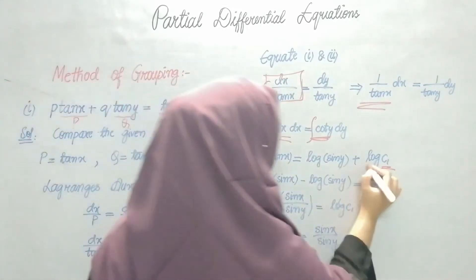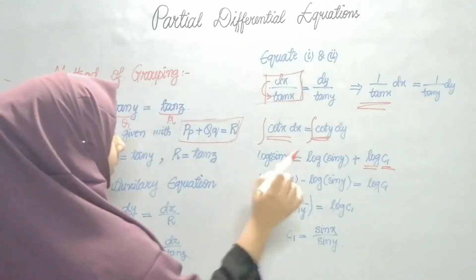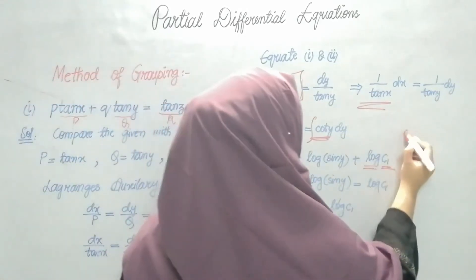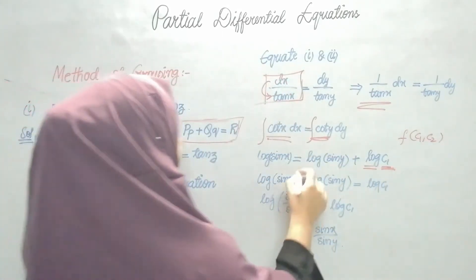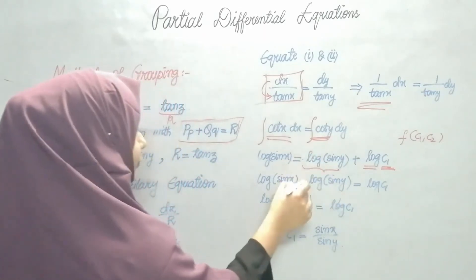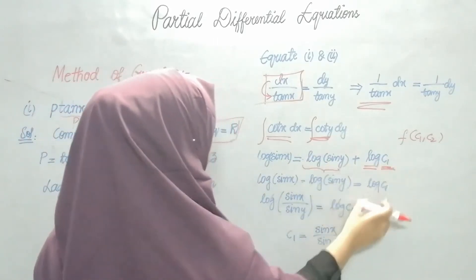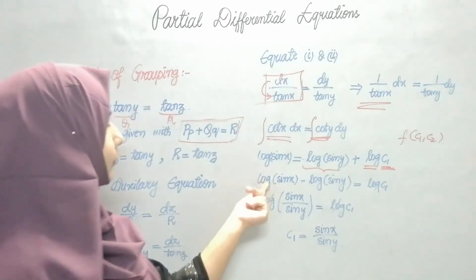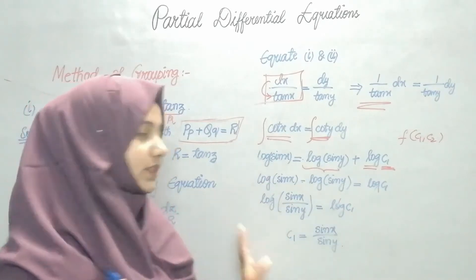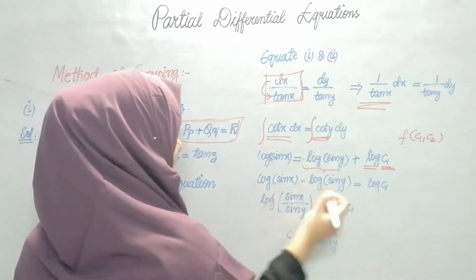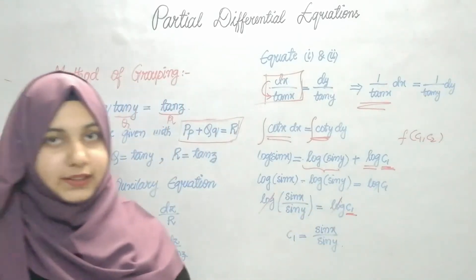I need the value of C1, so I send log(sin y) to the other side: log(sin x) − log(sin y) = log C1. This is in the form log m − log n = log(m/n), so log(sin x / sin y) = log C1. Cancelling the logs on both sides: C1 = sin x / sin y.